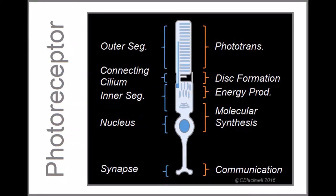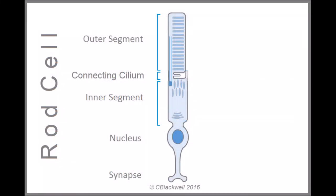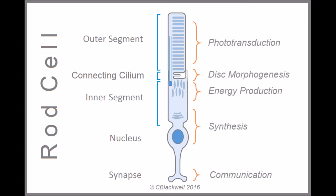The photoreceptor. There are, in general, five distinct parts of a photoreceptor cell, here using a rod cell as an example: the outer segment, the connecting cilium, the inner segment, the nucleus, and the synapse. Or, functionally, it divides up into these regions.